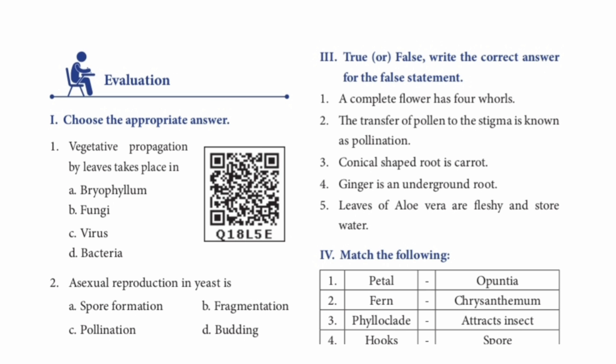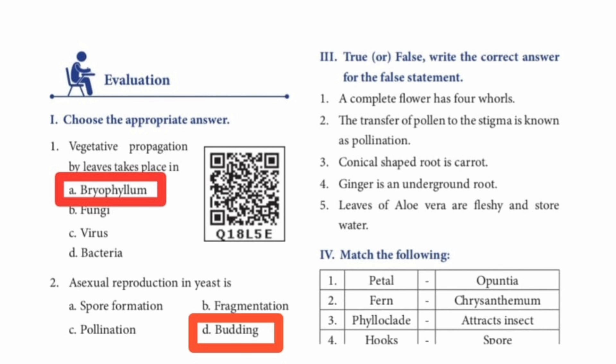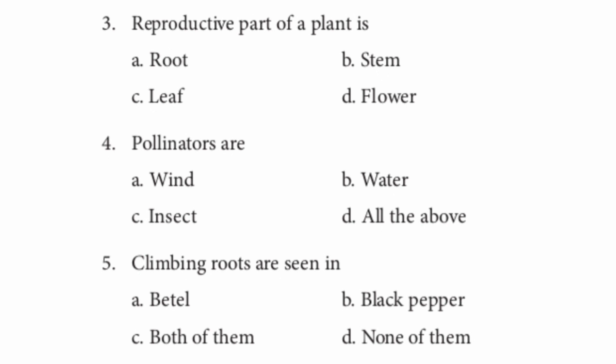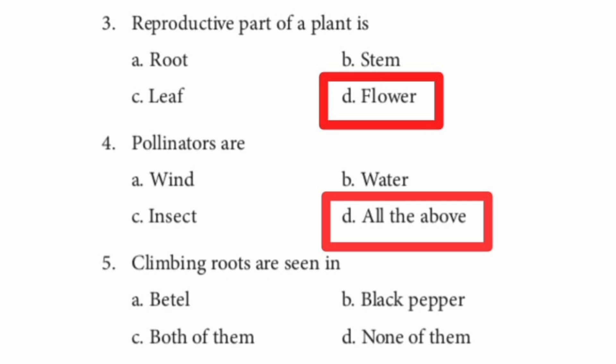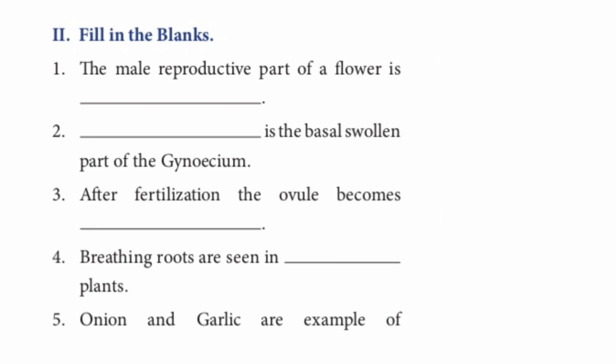Question 1: Vegetative propagation by leaves takes place in — Bryophyllum. Question 2: Asexual reproduction in yeast is — budding. Question 3: Reproductive part of a plant is flower. Question 4: Pollinators are all of the above. Climbing roots are seen in both of them.